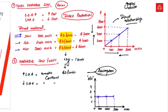A straight line parallel to the x-axis shows constant behavior — meaning that even if the level of activity increases or decreases, the variable cost per unit will remain constant. Again, this is subject to the assumption that the supplier will not change the price of raw material during the time period when we are conducting this study.